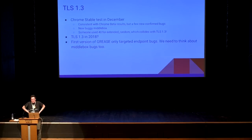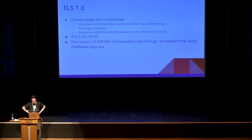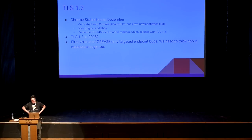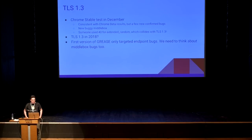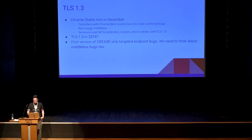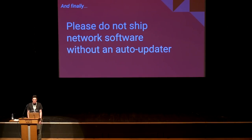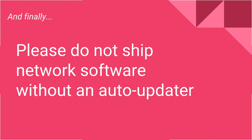Hopefully this year we should have TLS 1.3. If not, I'm going to be a little disappointed because I'm kind of sick of this protocol by now — I want to deploy it. The first version of GREASE was basically about endpoint bugs and doesn't work against middle boxes because it doesn't touch the server response. We need to think about how to keep our protocols from ossifying that way too, because the unfortunate reality of the network is that if you have any observable property of network traffic that does not change over time, we'll get stuck, and you need to be constantly doing something to deal with that. Finally, as a parting thought: folks who are shipping things, please do not ship network software without an auto-updater. It causes lots of pain and suffering for you and everyone else.